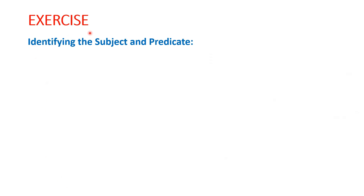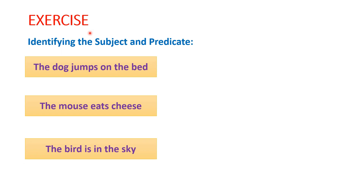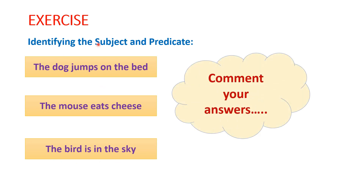This is the exercise for you. In the below sentences, please try to identify the subject and predicate. The first sentence is 'The dog jumps on the bed.' The second sentence is 'The mouse eats cheese.' The third sentence is 'The bird is in the sky.' Please try to identify the subject and predicate in these three sentences and comment your answers.